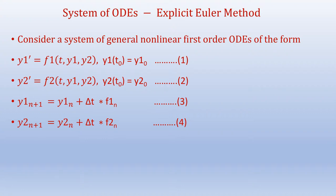When we express that in finite difference form using the explicit Euler method equations, we get: y1_{n+1} = y1_n + Δt × f1_n, and y2_{n+1} = y2_n + Δt × f2_n. Here we have a system of two first-order ODEs.